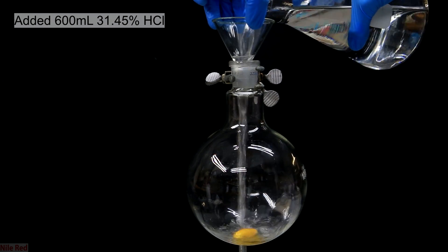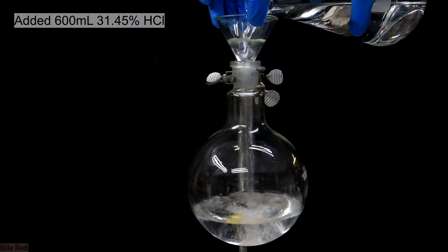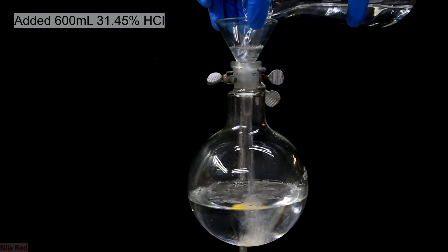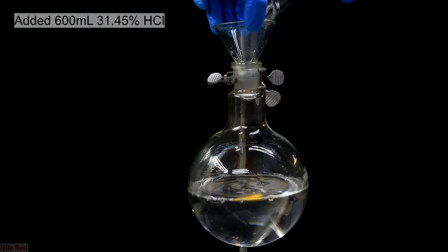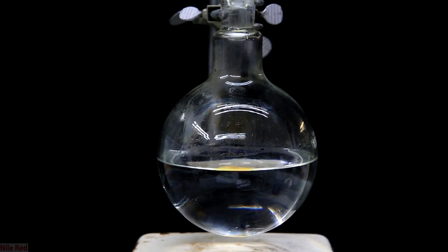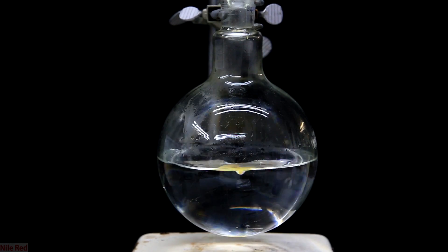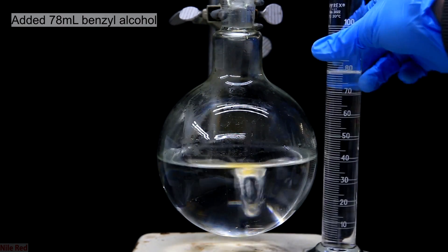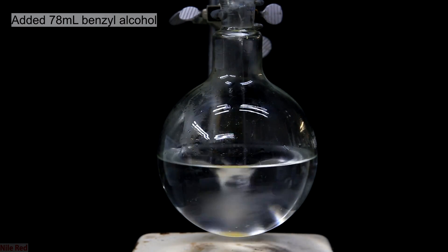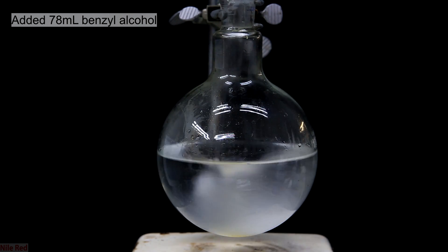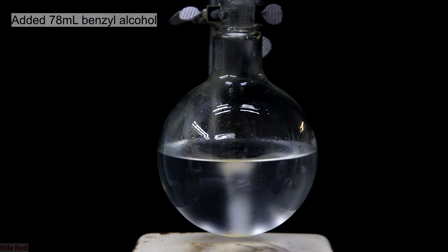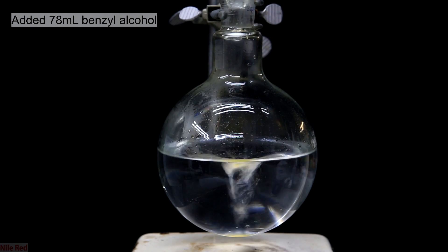I started off by adding 600 milliliters of 31.45% hydrochloric acid to a 1 liter round bottom flask. I then turned on some super strong stirring. With very strong stirring I poured in 78 milliliters of benzyl alcohol. Just for safety purposes the addition should be done relatively slowly.